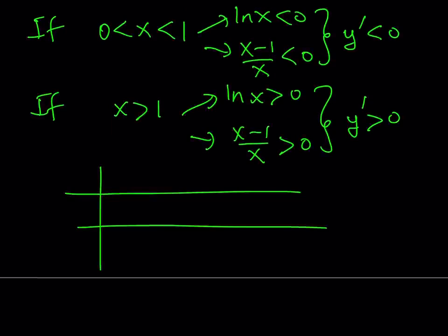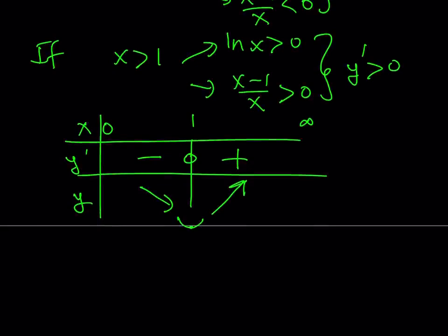We have the y prime, we have the x, and we have the function y. So 1 is a critical point. And what happens to the left of 1 and to the right of 1? Well, the function, this is 0, by the way. It's not coming from negative infinity, just 0 to 1, and then 1 to infinity. So if x is between 0 and 1, then our function has a negative derivative. Otherwise, it has a positive derivative. This means that our function has a negative derivative here and a positive derivative.